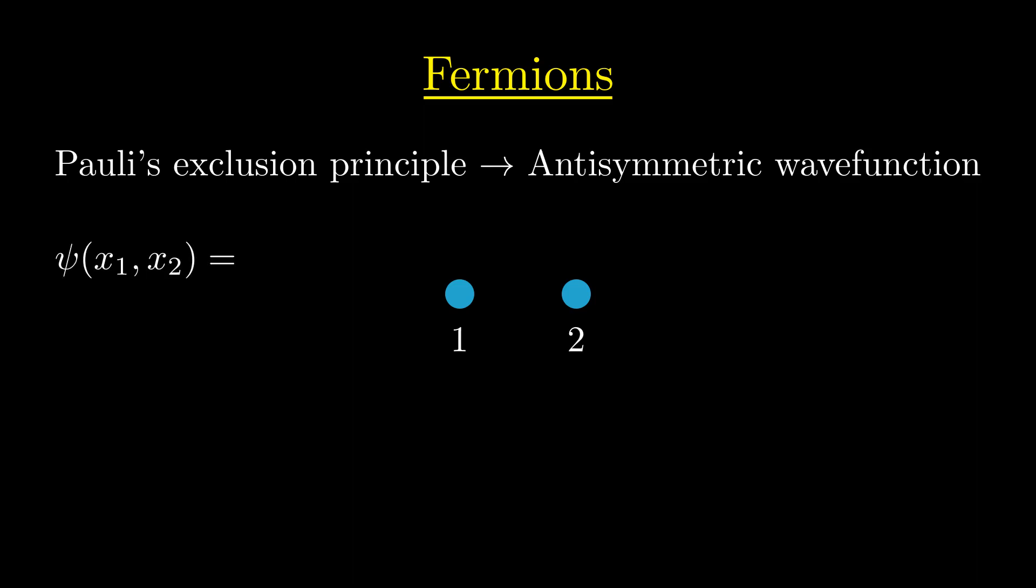Should particle 1 be at position x1 and particle 2 be at position x2, we can write down the following equality. Now notice what happens if we assume both particles to be at position x. We get that the wavefunction is equal to its negation, which means that the wavefunction must be zero.